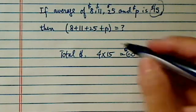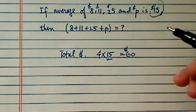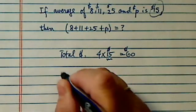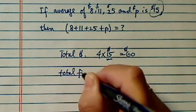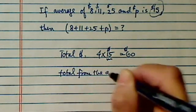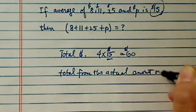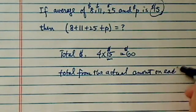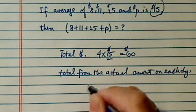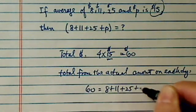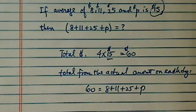The reason is that each day you made, on average, $15. For four days, that's $60 total. Now if you add the actual amount from each day, you should also have 60. So 8 + 11 + 25 + P = 60.